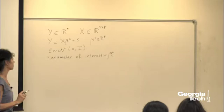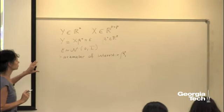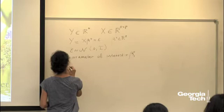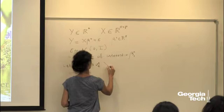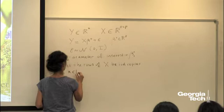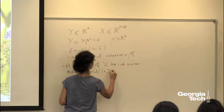To place it in a further context, let's say that the design is random and that the rows of the matrix x are Gaussian. Let the rows of x be i.i.d. copies of some vector x — maybe a little different notation — and this x is mean zero with some covariance matrix Sigma.